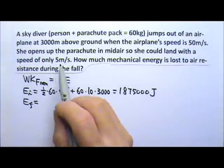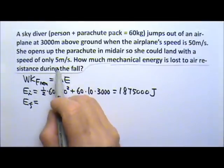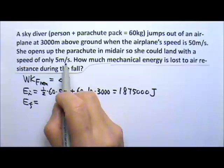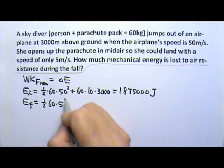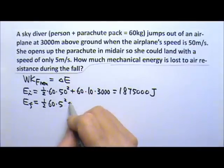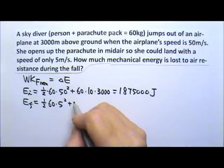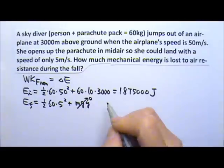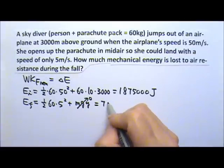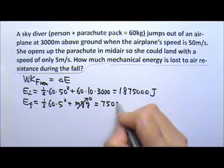At the end, right before she lands, she has only that much speed. So it's one half mv squared. And right before she lands, her mgy would be zero. So this gets 750 joules.